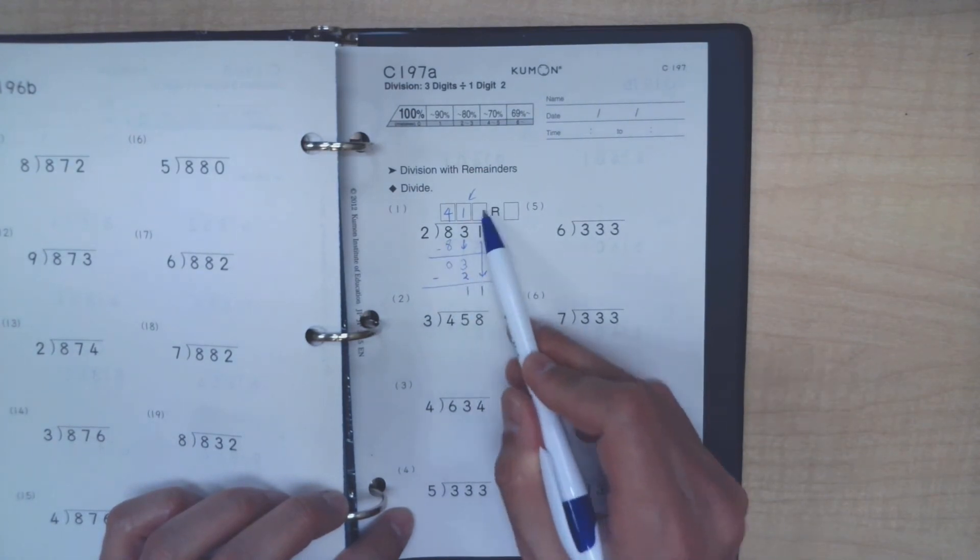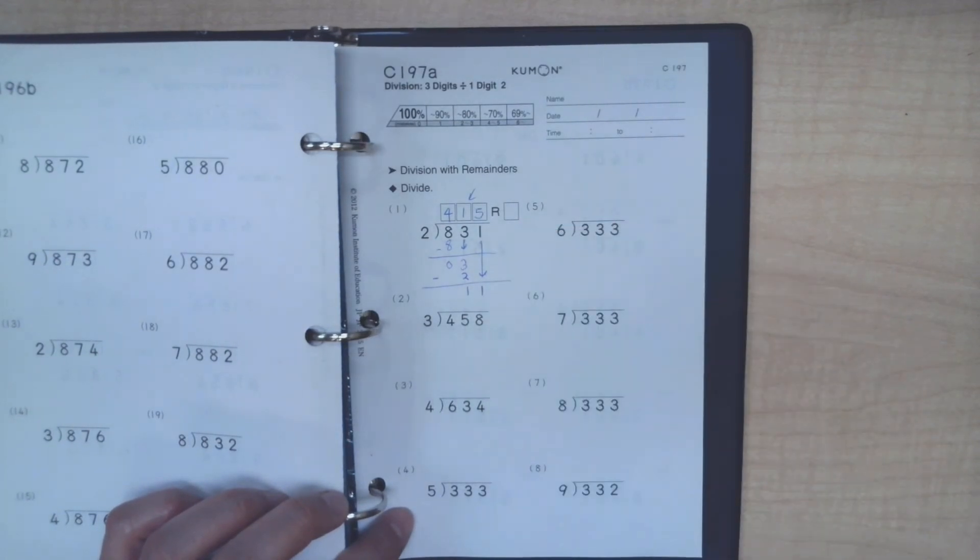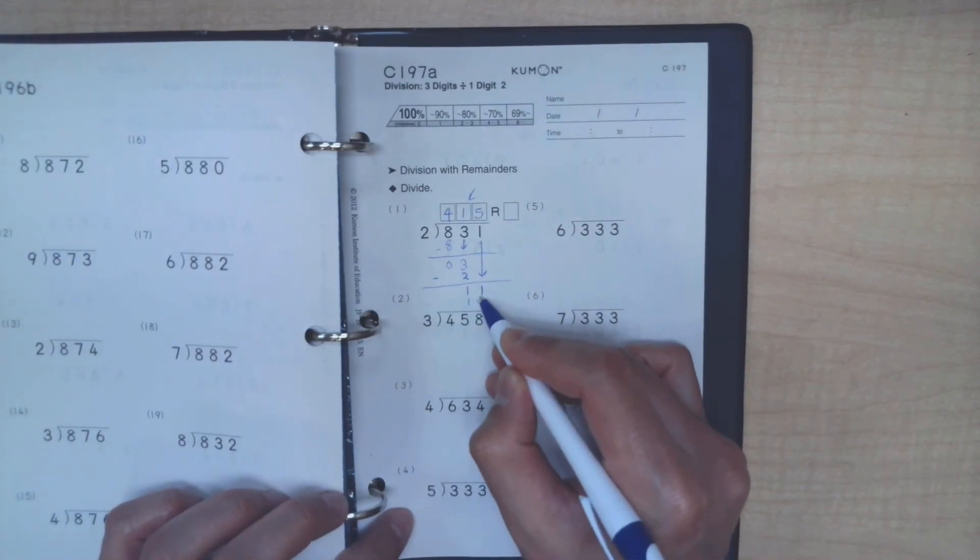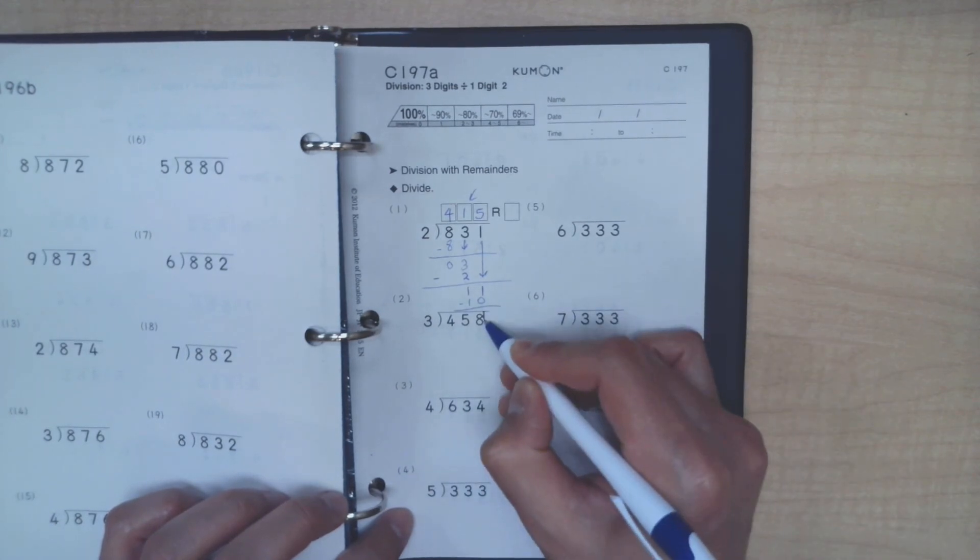But 2 times 6 would be 12, which is also really close to 11, but we would have gone over this number 11. So we would have to stay with 2 times 5, which is 10. When we do our subtraction, we would have 1 left.